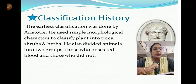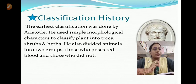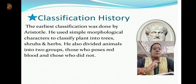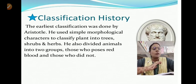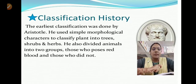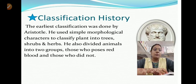Aristotle was first to attempt to classify all living organisms. The basis of his classification was morphological characters. He classified plants into trees, shrubs, and herbs - large ones as trees, medium-height ones as shrubs, and small ones as herbs. He also divided animals into two groups: those who possess red blood cells and those who did not.